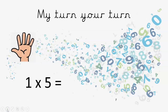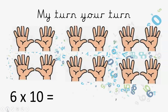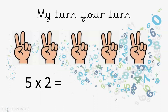Now, my turn, your turn. Here we go. One times five — it's five. Six times ten, use the picture to help you. Six times ten — well done, it's sixty. My turn: five times two. Use the picture. That's right, it's ten.